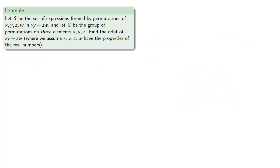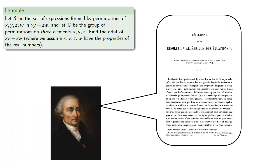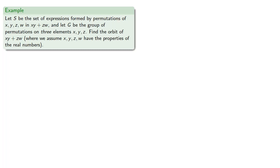Historically, these group actions are among the oldest parts of group theory. They appeared in Lagrange's work on the resolution of equations, and he applied them to the cases of multivariable functions and a permutation of the inputs. So let's consider our expressions that can be formed by permutations of X, Y, Z, and W in X, Y plus Z, W. So there's our set. And let's consider a group of permutations on three elements, X, Y, and Z.